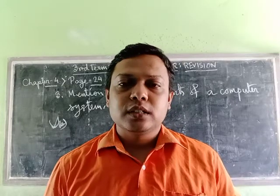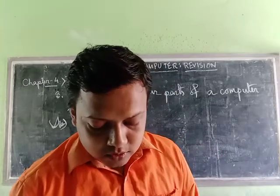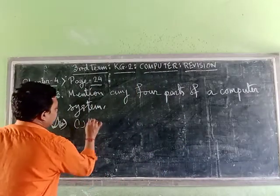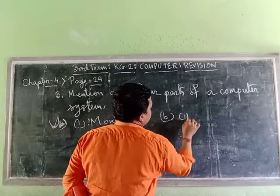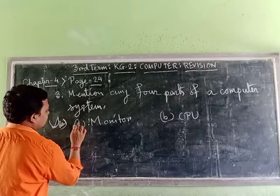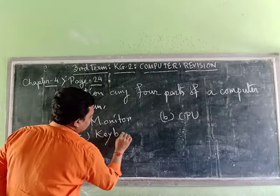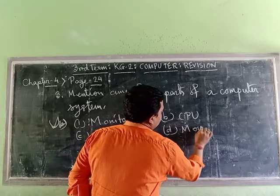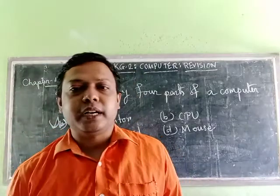Other parts include UPS, speaker, printer, and so on. Now, the answer: the main parts of a computer system are number 1 — monitor. These are the four main parts of a computer system.